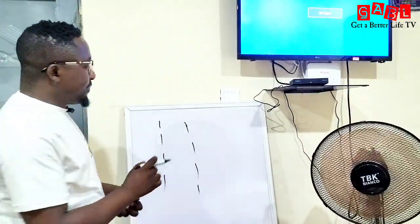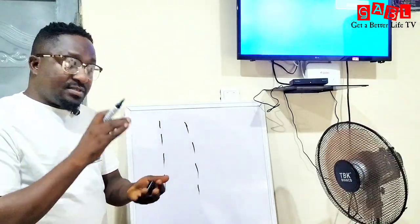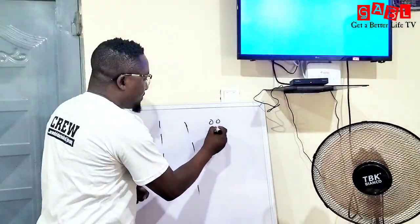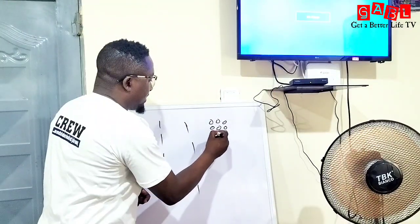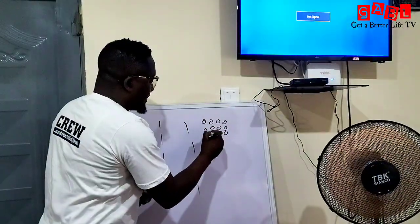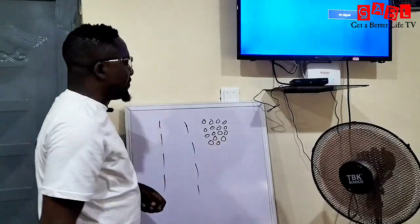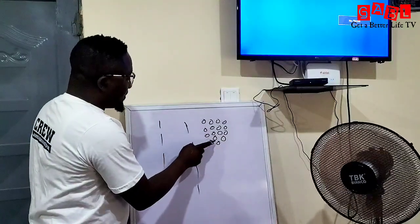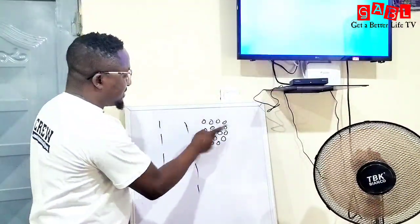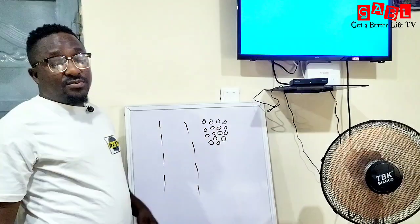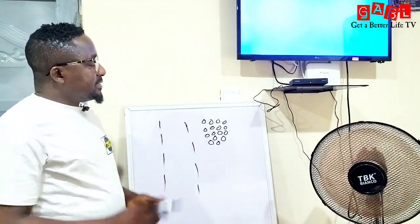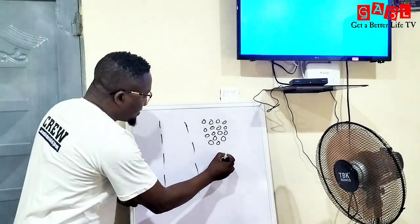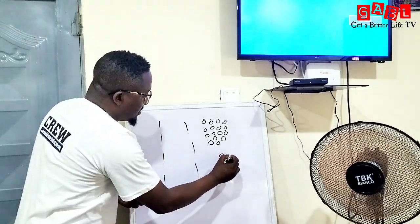The question is how did they arrive at this sign? With the use of ikin, babalawos usually have 16 ikin seeds in their pan — 16 seeds: one, two, three, four, five, six, seven, eight, nine, ten, eleven, twelve, thirteen, fourteen, fifteen, sixteen. So they have these 16 seeds in their palm.